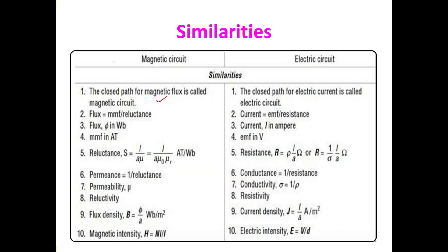The closed path for magnetic flux is the magnetic circuit; the closed path for electric current is the electric circuit. Flux is analogous to current. We know V = IR, so I = V/R (voltage divided by resistance). Similarly, MMF = φ×S, so flux φ = MMF/S (MMF divided by reluctance). Flux is analogous to current, and MMF is analogous to EMF, and reluctance is analogous to resistance.